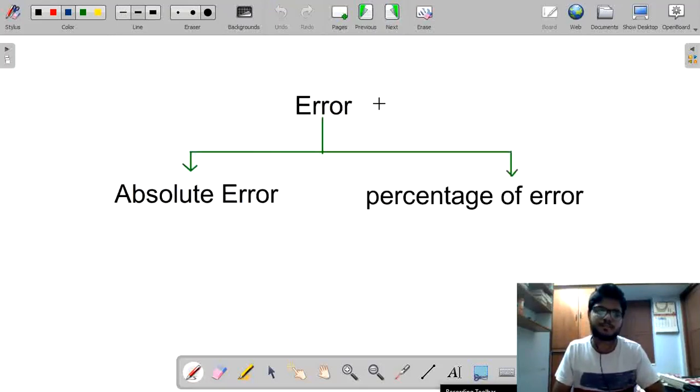Next, it's very important that error is classified as two types. First one, absolute and the second one, percentage of error. We will study now about these two terms in detail.